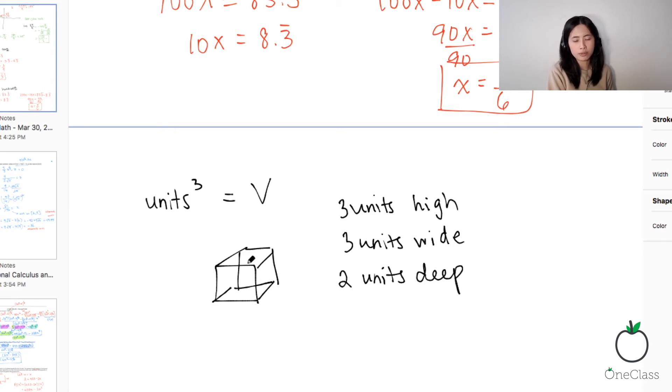So if you remember, in order for you to find the volume of a cube, all you have to do is multiply length times width times the height, or side times side times the height. So in that case, all you have to do is multiply three times three times two. That would be three times three, so that's nine times two, that's 18.